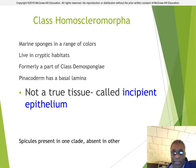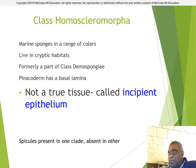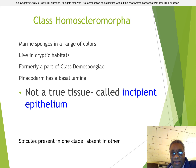The last class is Homoscleromorpha, which is not a class that's really as important. Marine sponges are found in a range of colors. They tend to live in cryptic habitats, and they may or may not have spicules.